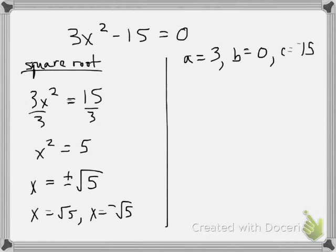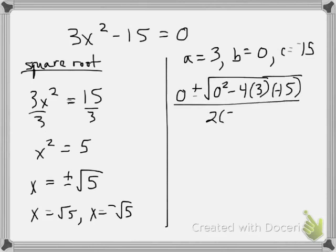So let's solve this. I get negative b or 0 plus or minus the square root of b squared minus 4ac, so that's a negative 15, all over 2a.